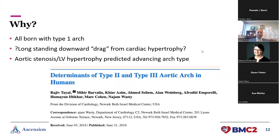An interesting fact I discovered while preparing this: we're all born with a type one arch. When we're born, all vessels come off in a straight line. The working theory for why some people develop a downward pull is that the aortic arch is fixed in the chest, and if you have longstanding aortic stenosis or cardiac hypertrophy, the weight of the heart literally dangles from the aorta and pulls it down into that downward trajectory.